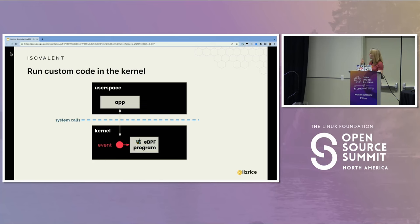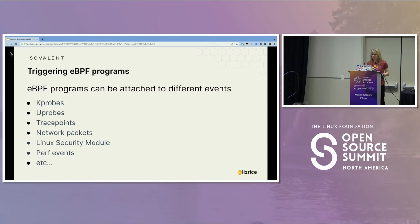Literally any function call, any event, any perf event, any network packet arriving at various points in the stack can be used as an event to attach an eBPF program to. Whenever that event happens, it will run our eBPF program in the kernel. There are lots of different types of events we can attach programs to, and that influences what kind of things we can do with those programs.